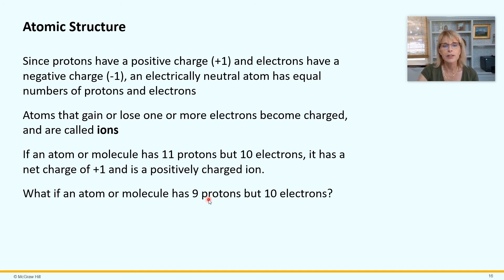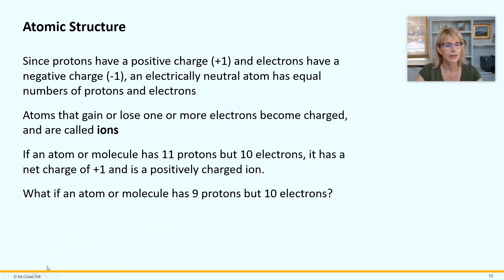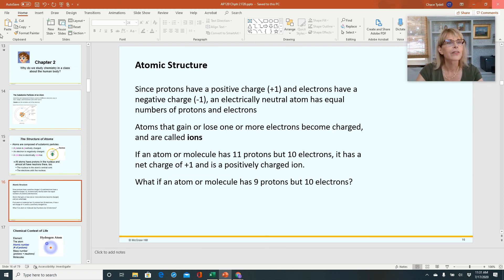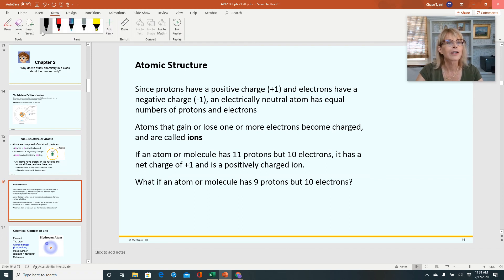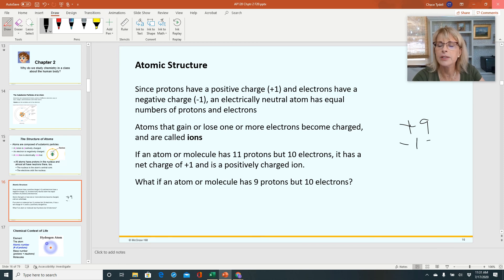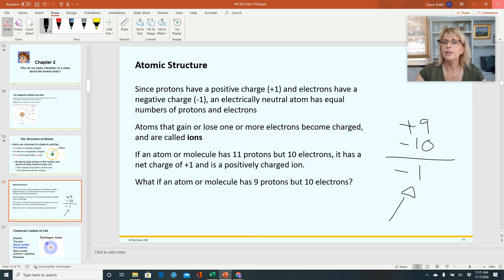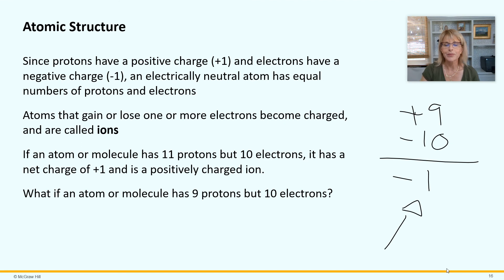Plus nine minus ten equals minus one. So that atom would have a net charge of minus one and would become a negatively charged ion.